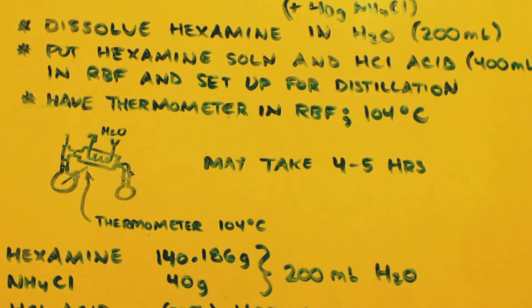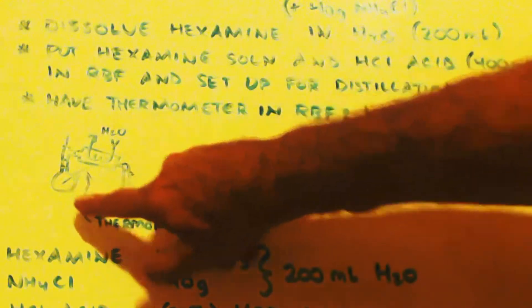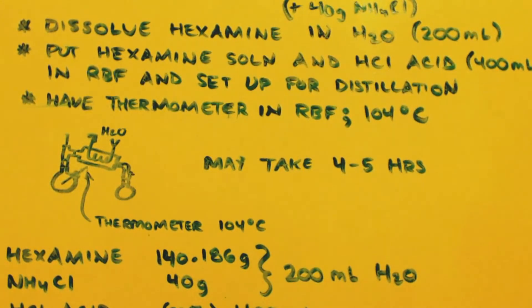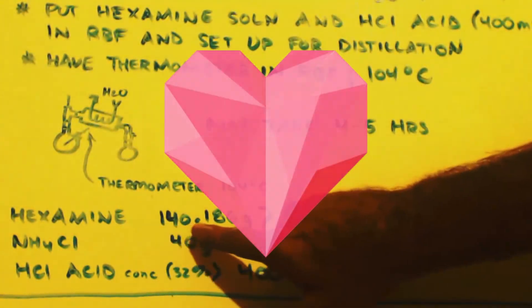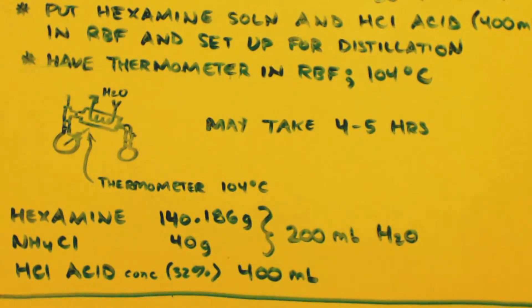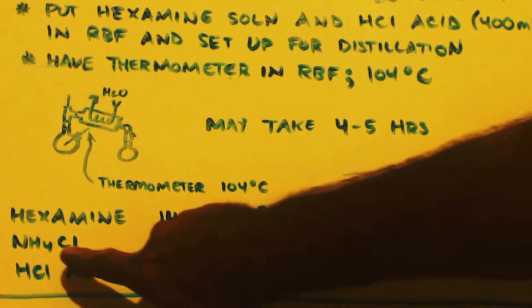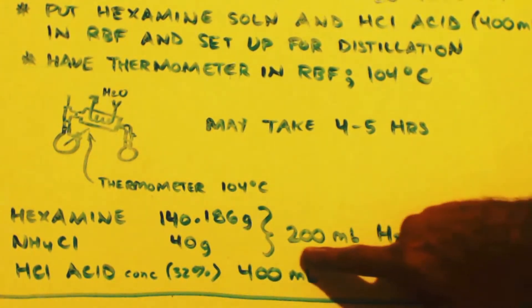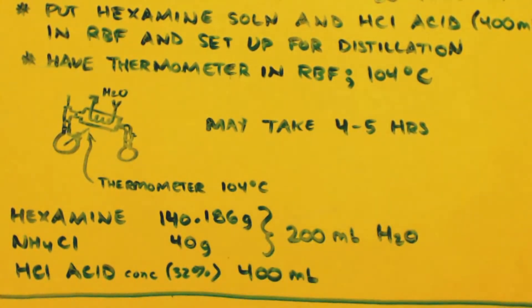Make sure it's a two-neck flask so you can put a thermometer in there. Basically, just bring up the temperature slowly to 104°C — and I mean the round-bottom flask itself, not the still head. The hexamine is 140.18 grams per mole; I used 186 grams in the experiment. The 40 grams of ammonium chloride and hexamine are both dissolved in 200 milliliters. The HCl from the store is usually 32% — use 400 milliliters, which is approximately 4 moles of HCl, a little more than 4 moles.